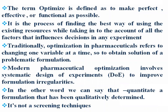The term 'optimize' is defined as to make as perfect, effective, or functional as possible — to form a perfect dosage form, an effective dosage form, and a functional dosage form. It is a process of finding the best way of using existing resources while taking into account all the factors that influence a decision. We change variables to get the formula, and this is called DOE (Design of Experiments), which improves formulation irregularities.